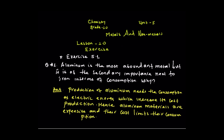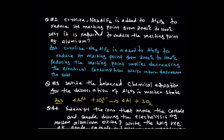Let's come to question number two. Cryolite is a mixture of sodium, aluminium, and fluorine that is added to aluminium oxide. Aluminium oxide — to reduce its melting point.